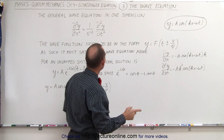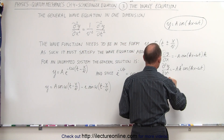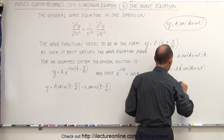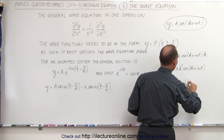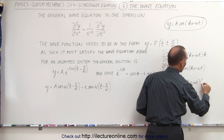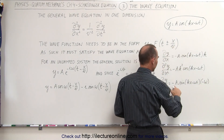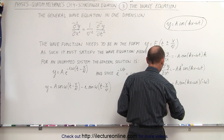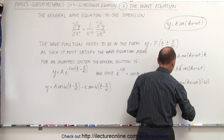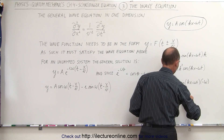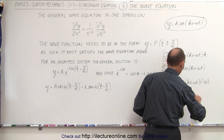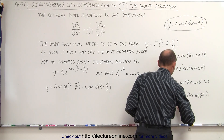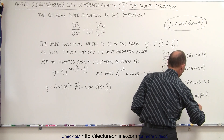We'll do the same for the derivative with respect to t. The partial of the function with respect to t is equal to minus A times the sine of kx minus omega t times the derivative of this, which is minus omega. This minus cancels out this minus, so we have A·omega·sine of kx minus omega t. Then the second partial of y with respect to t equals plus A times omega times the cosine of kx minus omega t times minus omega again, making this equal to minus A·omega² times the cosine of kx minus omega t.